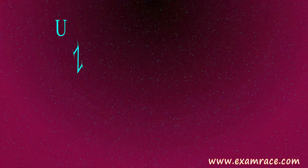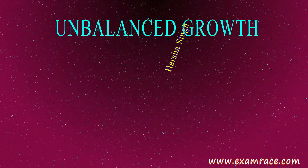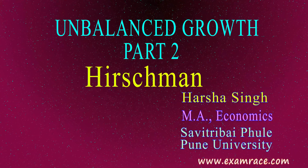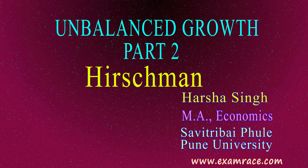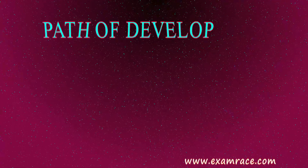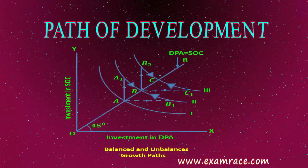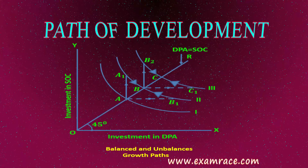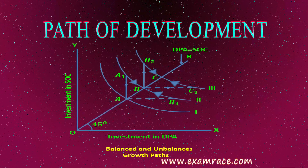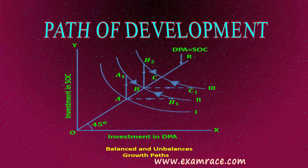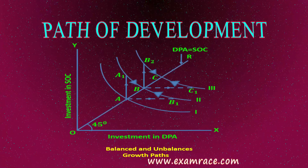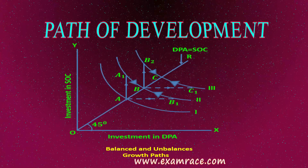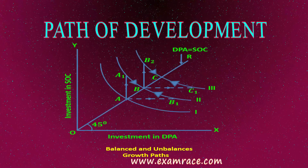We will discuss the theory of unbalanced growth, which was given by Hirschman. According to this theory, investment should not be made in all sectors simultaneously in underdeveloped or less developed countries. Rather, it should be made in leading sectors or strategic sectors. Now take a look at the diagram — through this diagram we will decide which sequence of investment should be pursued for rapid development or growth.